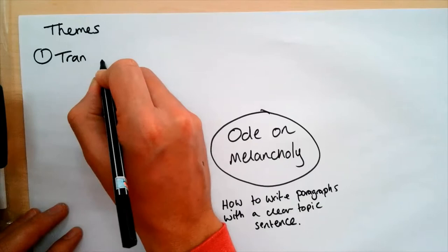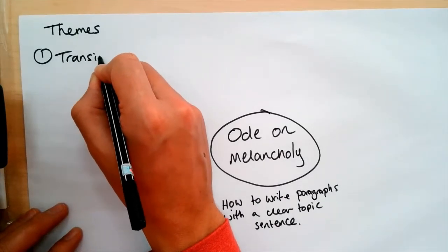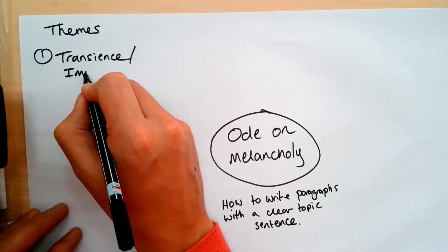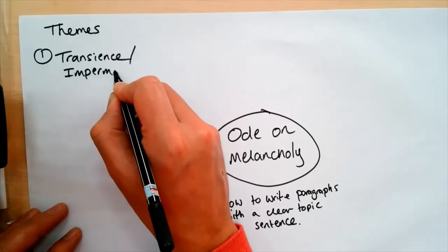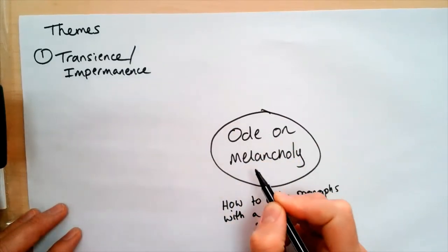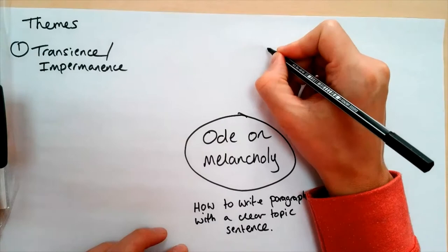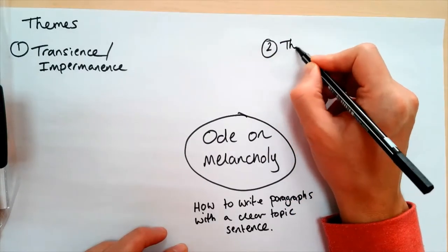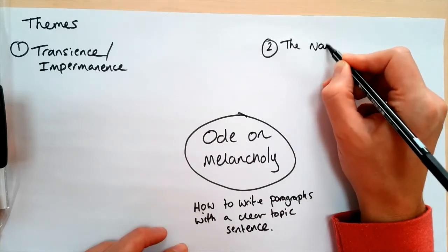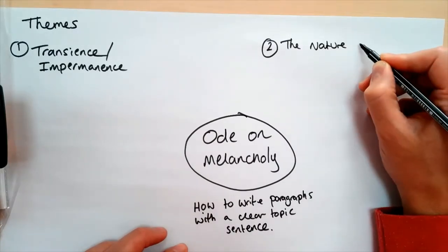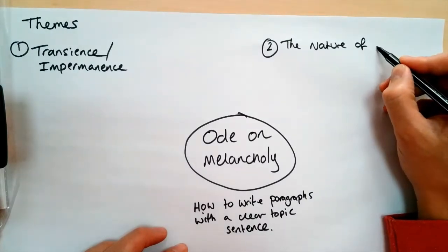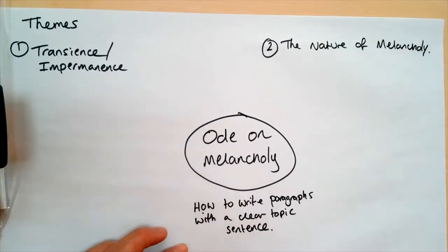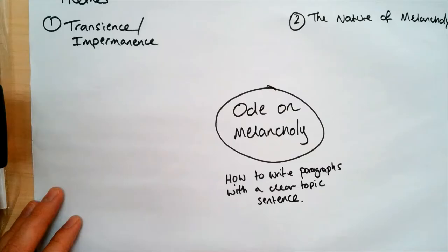So before we can come up with a good topic sentence, the first thing we need to do is identify the key themes for the poem, and then we'll use these to create our topic sentences. The first theme is transience or impermanence. This refers to the way that nothing that is very good can exist forever, and nothing that is very bad, like melancholy, can exist forever. The point is they are only very good or very bad because they don't last very long.